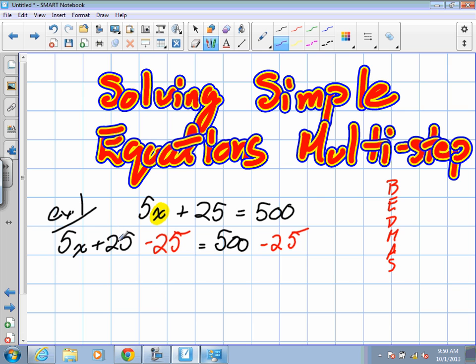On the left side, positive and negative 25 create a zero. So we'll be left with 5x equals 475.